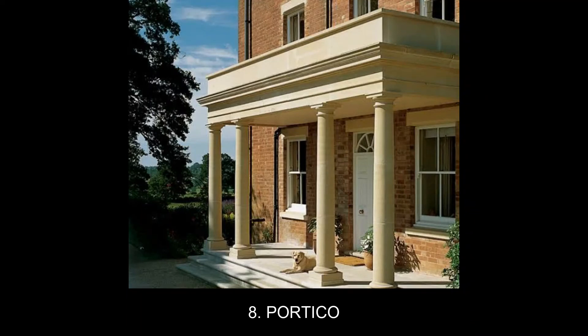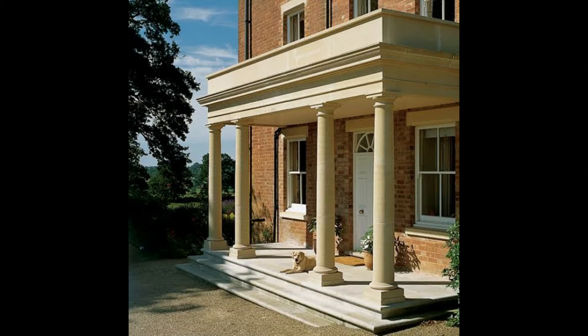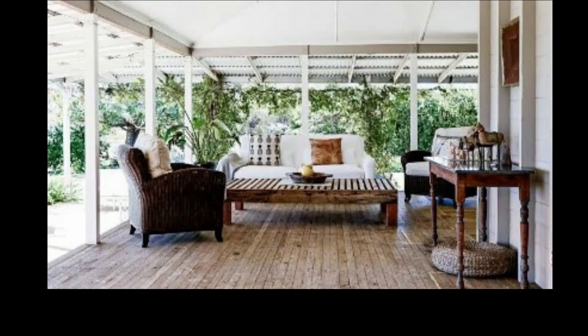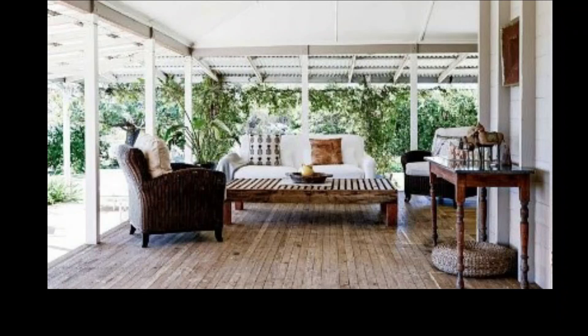Next one is portico. It is just like a porch but supported by columns. The last one is veranda, which is a roofed platform having open sides. It is at the level of the ground floor and is used for recreation and sitting outside.